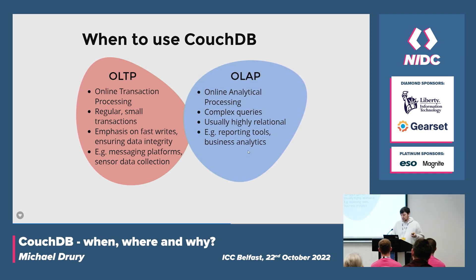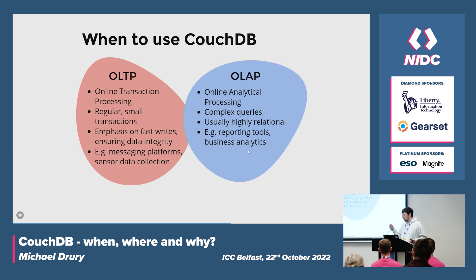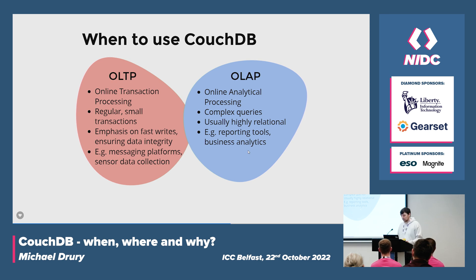A quick point about OLTP versus OLAP. You can generally break down your data needs into these two types of applications. OLTP — online transaction processing — involves regular, small transactions with an emphasis on fast writes and ensuring data integrity; it ends up in messaging platforms or sensitive data collection. OLAP — online analytical processing — involves very complex queries, is very relational, and covers things like reporting tools and business intelligence. This is a useful method to decide when a particular data store is the right choice.